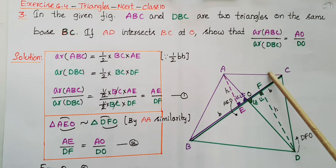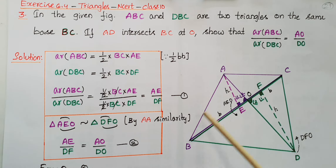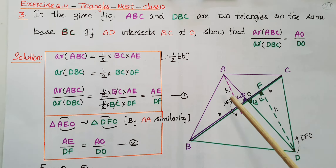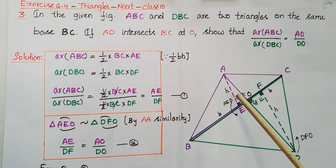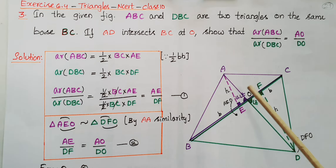We cannot show that these two triangles are similar because no parts are stated to be equal, the sides are not parallel, and the side lengths are not given. So we have to apply the area formula for the triangle here.